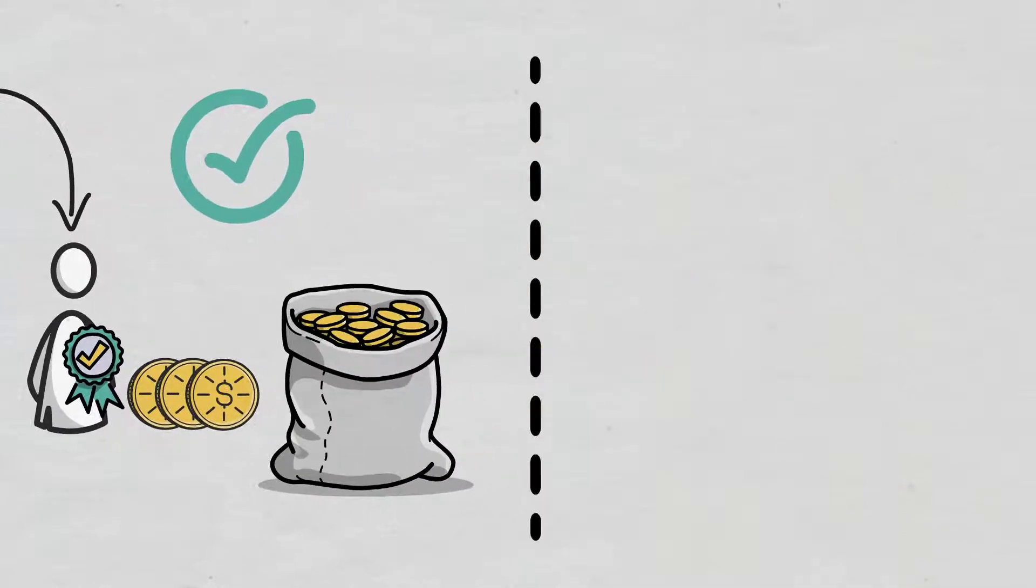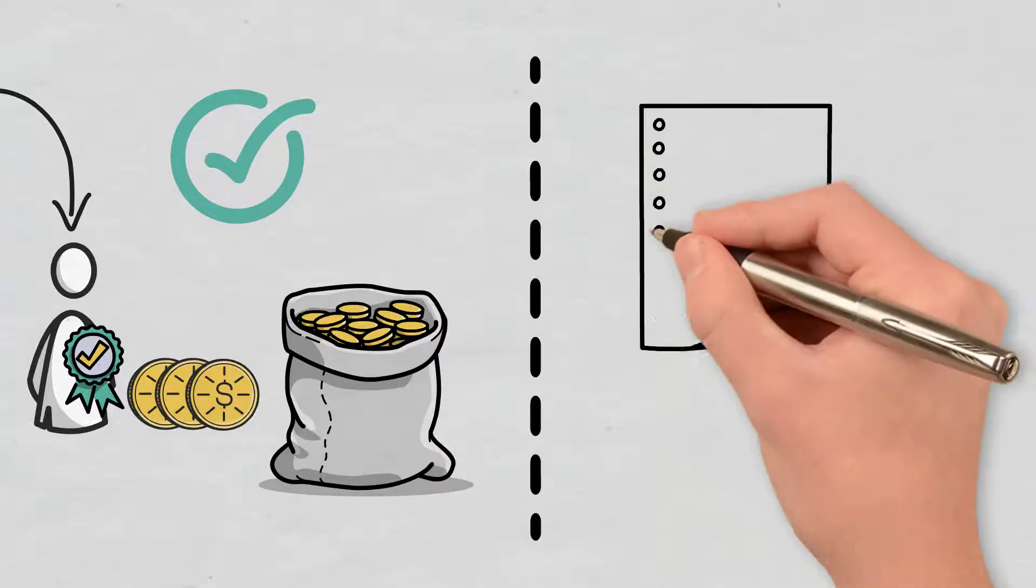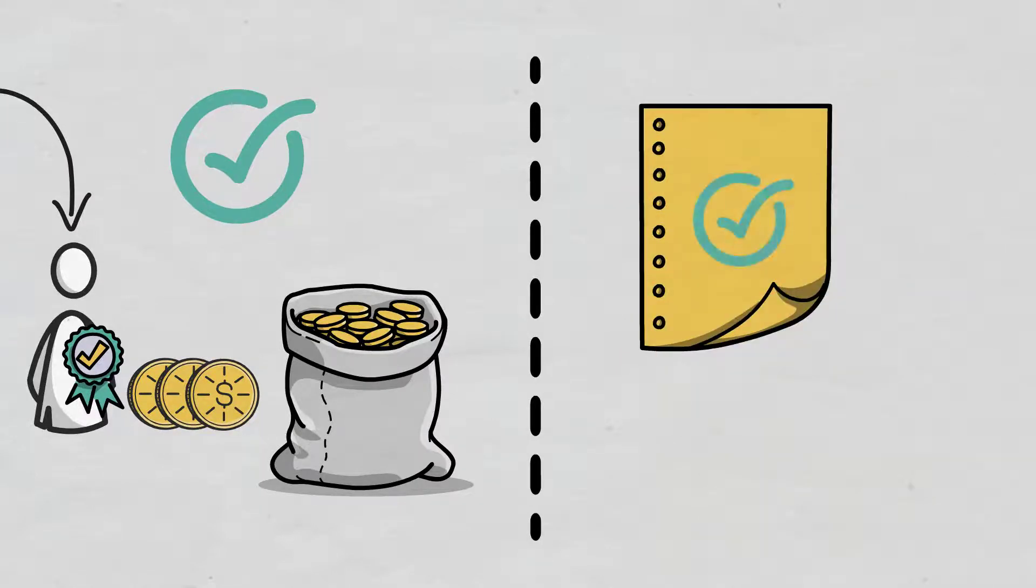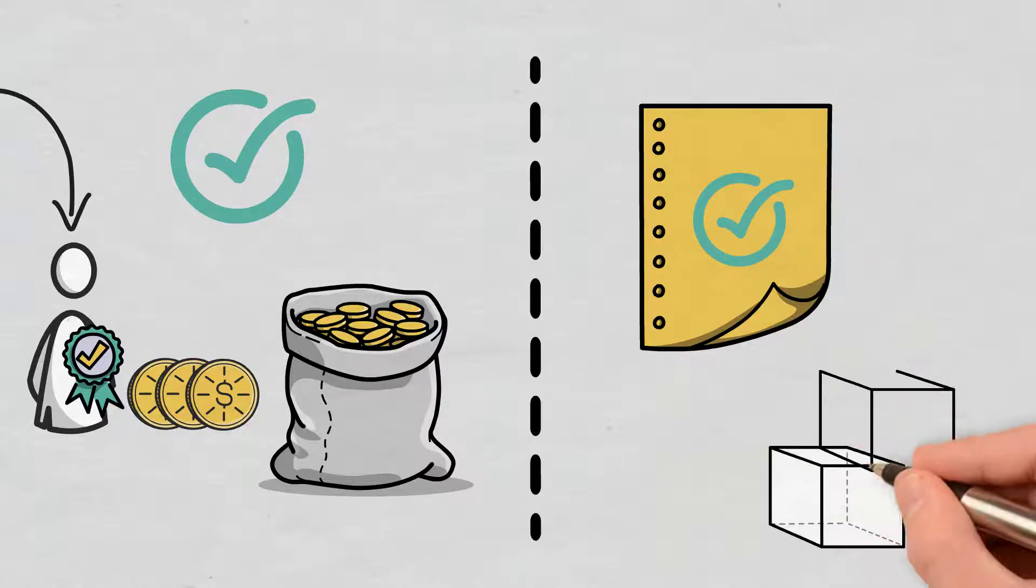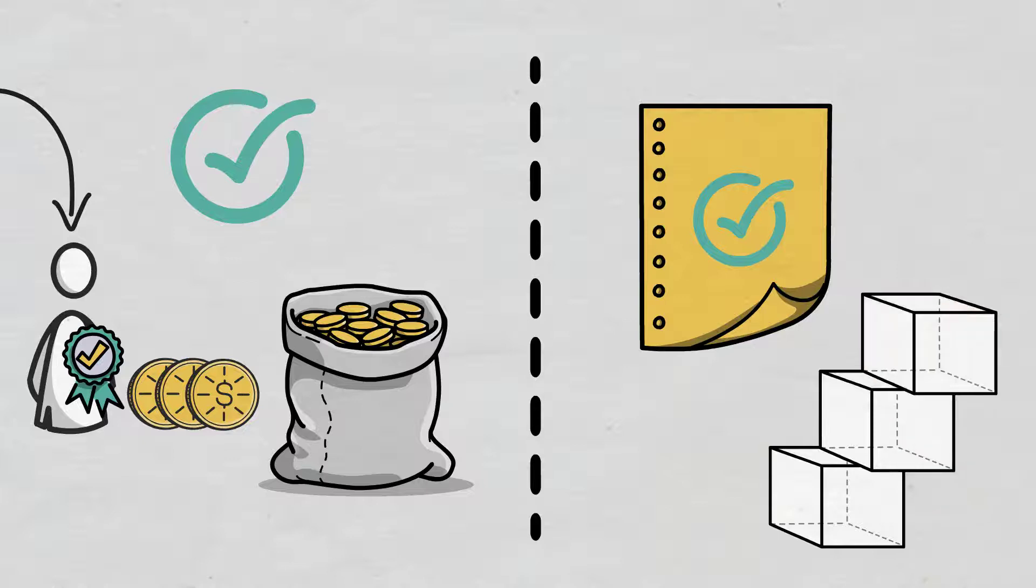This method serves as an alternative to proof-of-work, the original consensus mechanism used in blockchain technology for confirming transactions and adding new blocks to the chain.